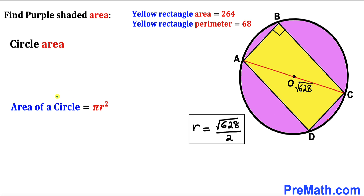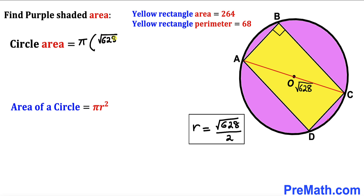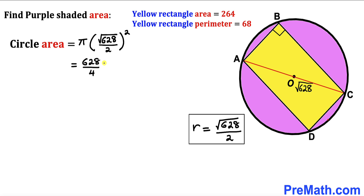Recalling the circle area formula — area equals π r² — our radius r is √628 divided by 2. So the area of the circle is π times (√628 / 2)², which simplifies to 628 divided by 4 times π, giving us 157π.